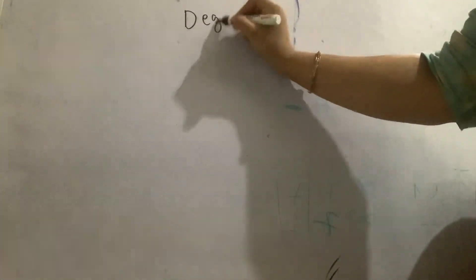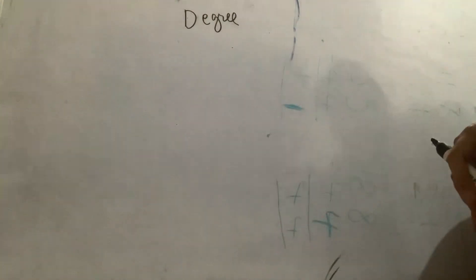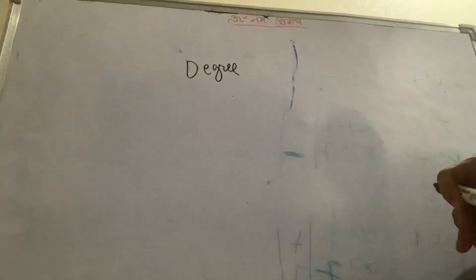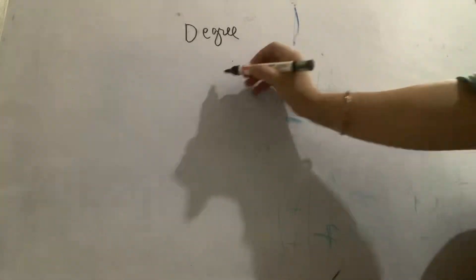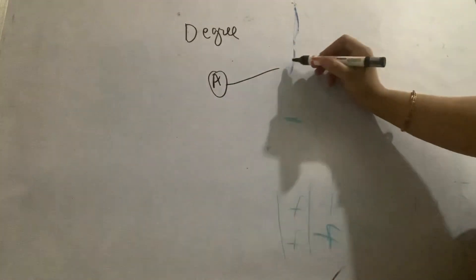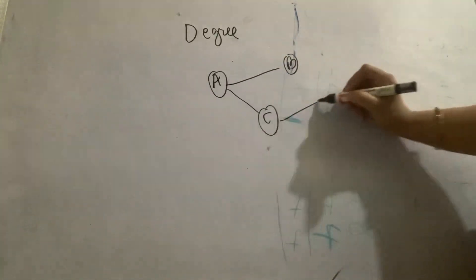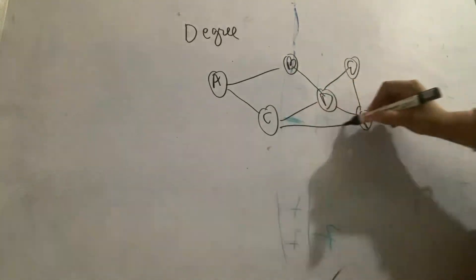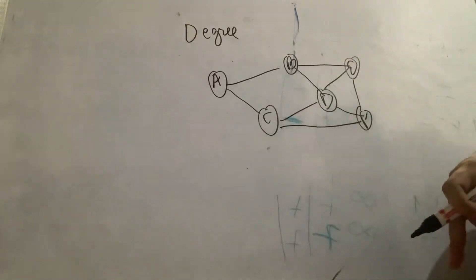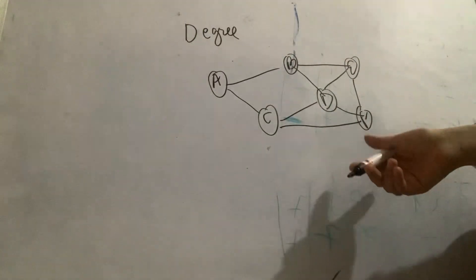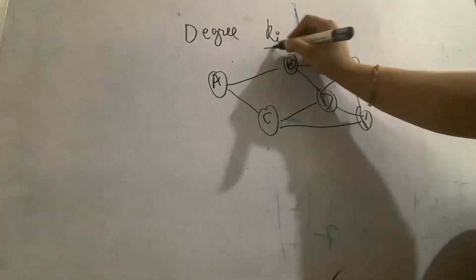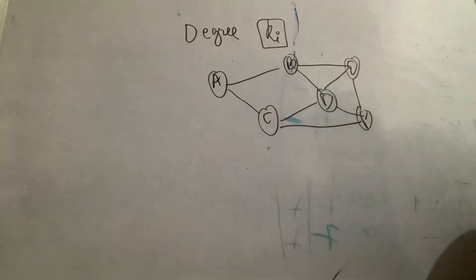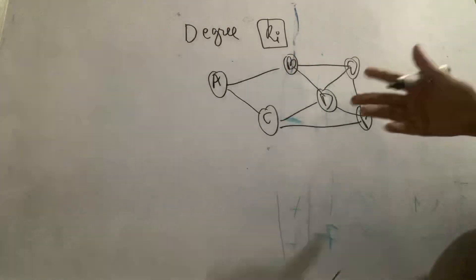The topic we are moving on to is some topics about graphs. What we have is degree. Do you all know what is a degree of a graph? Degree can simply be defined. If I define degree K_i for any i-th node, K_i represents the degree of the i-th node. It is the number of links from that particular node.